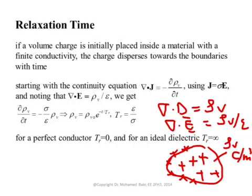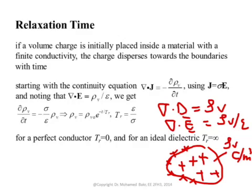If sigma is infinite, as in a perfect conductor, then T_relaxation equals zero — it takes zero time for the volumetric charge to move from inside to the boundaries. If sigma equals zero, as in an ideal dielectric or ideal insulator, then T_relaxation is infinite, meaning it takes an infinite amount of time for the volumetric charge density to disperse to the boundaries. So for any material with some non-zero conductivity, after a certain period of time the volumetric charge density decreases and charges reside on the surface.